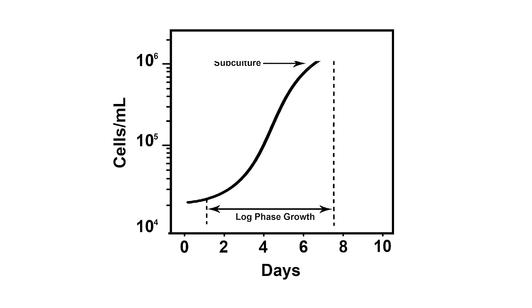Cells should be passaged when they cover the plate, or the cell density exceeds the capacity of the medium. Maintaining log phase growth will maximize the number of healthy cells for your experiment.